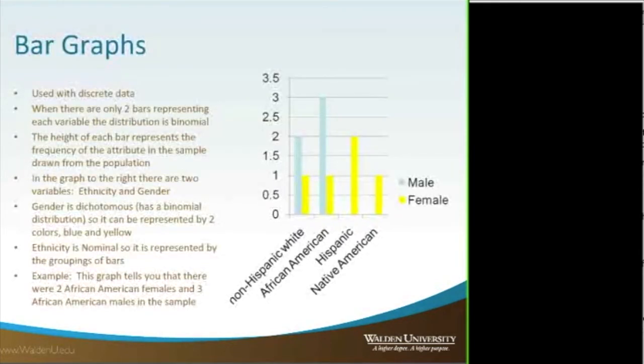So again, here we have an example with a bar graph. So we have some ethnicity on one axis and gender on another axis, and we can plot those data points.